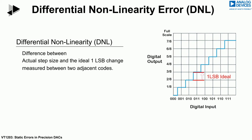DNL errors translate into step sizes which are larger or smaller than would be expected — in other words, larger or smaller than the ideal step size. This, in addition to noise, reduces the accuracy of the DAC output.